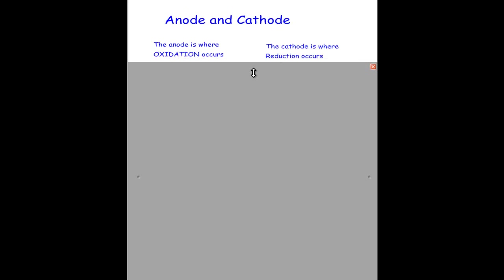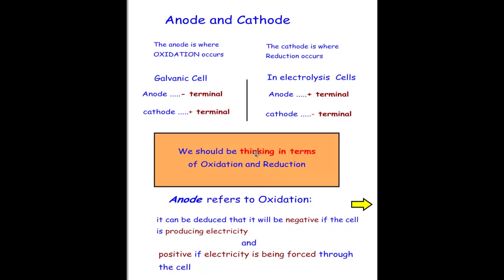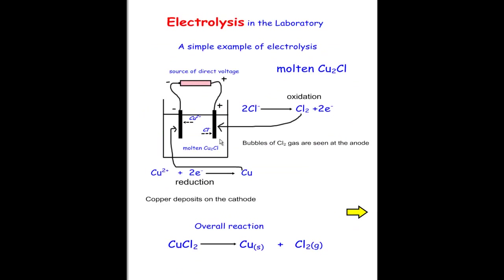Talking about anodes and cathodes: the anode is where oxidation occurs and the cathode is where reduction occurs. In a galvanic cell the anode is the negative terminal and the cathode is positive, whereas in electrolysis the anode is positive and the cathode is negative. The key is to think in terms of oxidation and reduction — the anode is negative if the cell is producing electricity, and positive if electricity is forced through the cell.